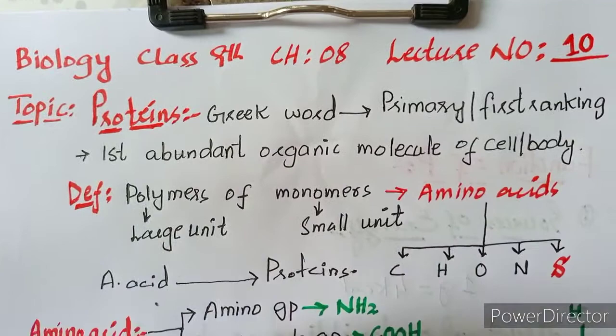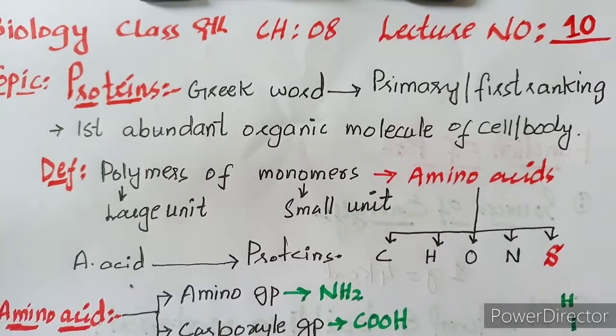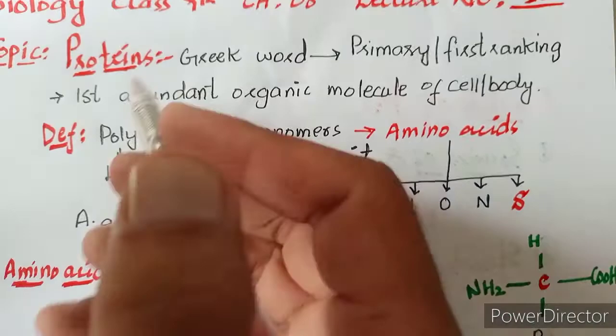In the next lecture, we have a question about the first thing about human food. The next component is protein. Protein is derived from a Greek word.